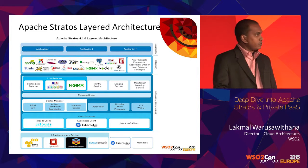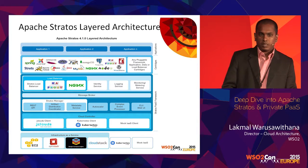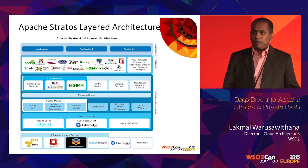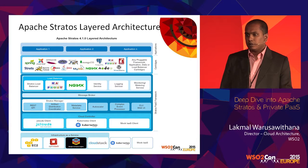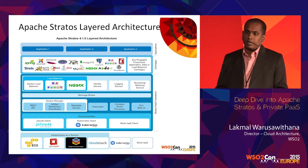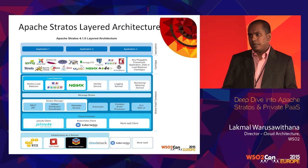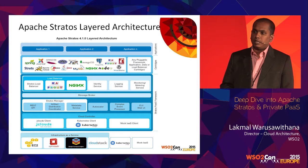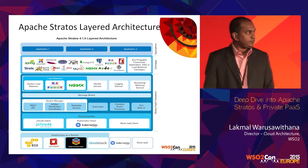We have introduced several load balancers as reference architecture implementations. You can now use HAProxy and Nginx by default as ready-made load balancers. It is also very easy to integrate any third-party load balancers into Stratos with this architecture support.